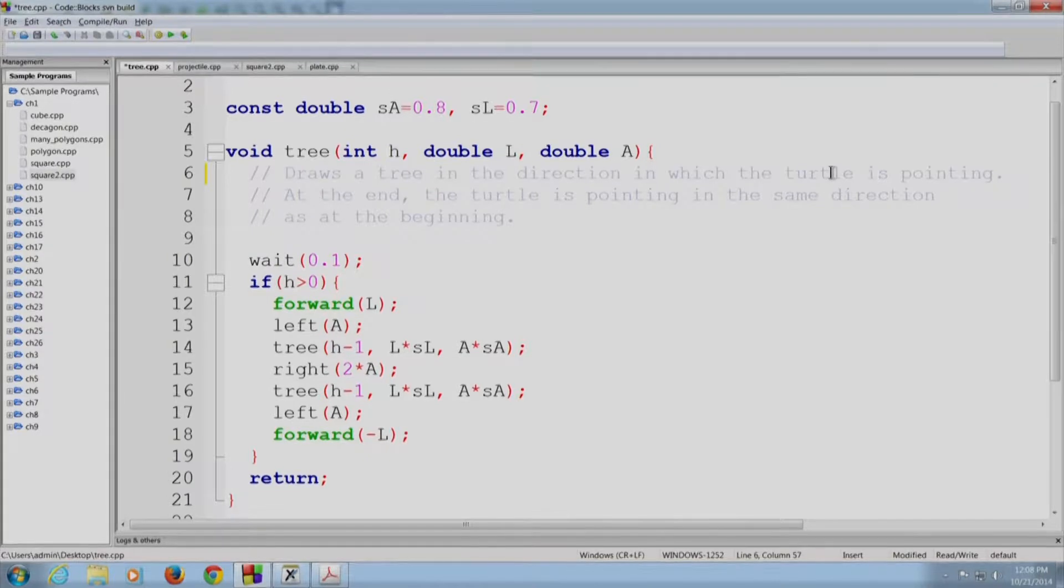As I said it has 3 arguments H, L and A and then it satisfies an invariant. The invariant is as follows. This function when called will draw a tree in the direction in which the turtle is pointing. At the end the turtle will be left pointing in the same direction as at the beginning. So the invariant is really in two parts. There is a precondition that this function requires and then there is a post condition that this function is guaranteed. The post condition is required so that after making one call you know where the turtle is pointing and therefore you can make other calls as needed.